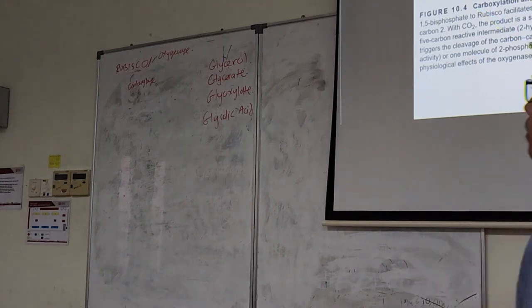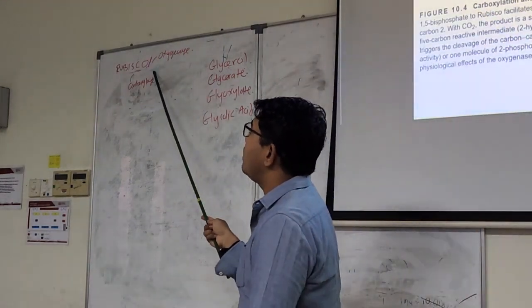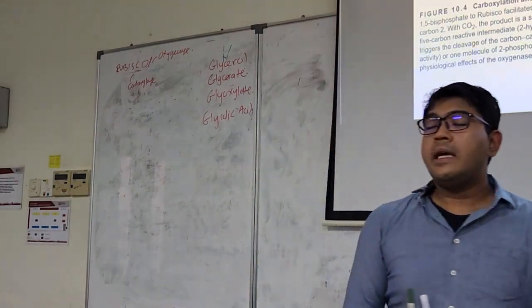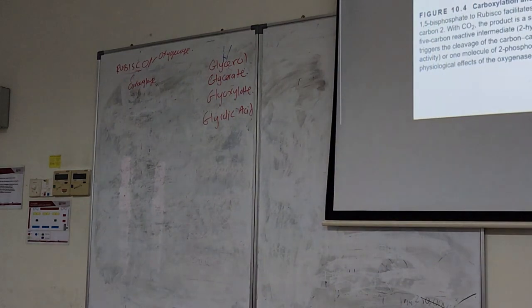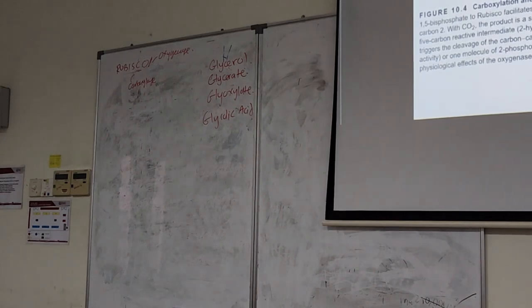However, if this RuBisCO decides to do the oxygenase, it gets the oxygen, the molecular oxygen, fuses with RuBP, then you go down here. It will produce two molecules as well, but only one is phosphoglycerate. The other one is phosphoglycolate.